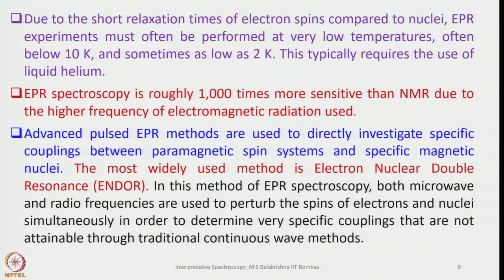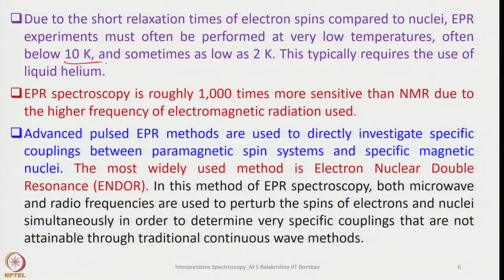Due to the short relaxation times of electron spins compared to nuclei, EPR experiments must be performed at very low temperatures, often below 10 K and sometimes as low as 2 K. This typically requires the use of liquid helium, which is a major drawback of EPR spectroscopy.